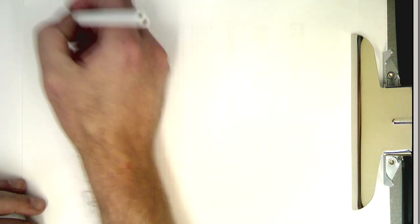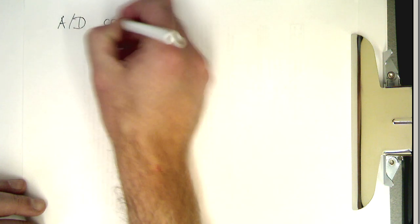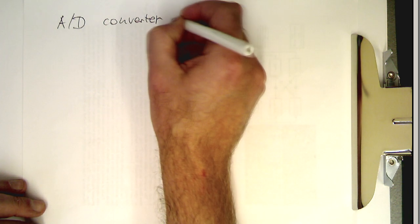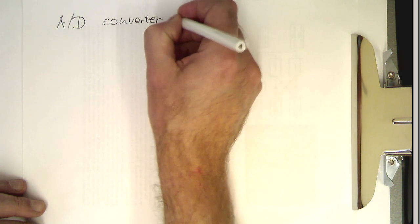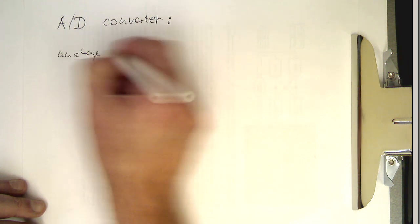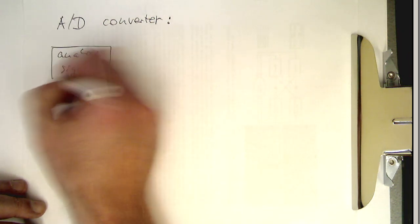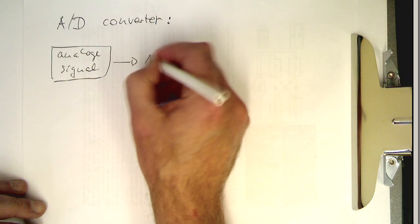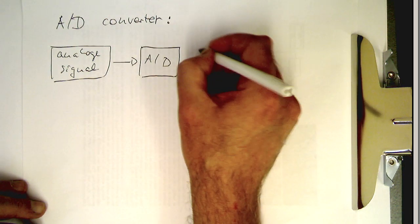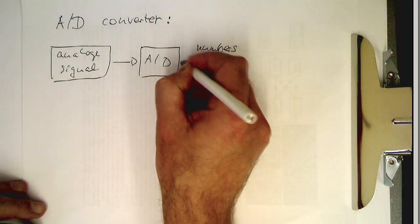Now let's look at the A/D converter and how this works inside of this converter. Remember we have the analog signal, and the analog signal is sent into the A/D converter, and then this produces numbers, usually integer or something like that.